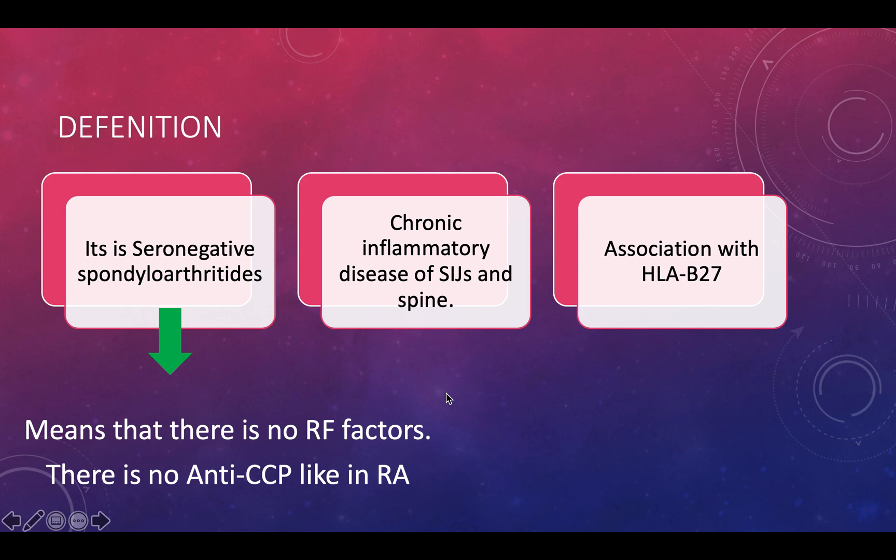Ankylosing spondylitis is usually associated with HLA-B27 involvement. People with genetic predisposition to HLA-B27 have an increased risk of developing ankylosing spondylitis.